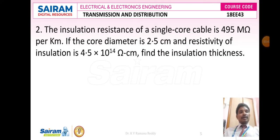Problem number two: the insulation resistance of a single core cable is 495 mega ohms per kilometer. If the core diameter is 2.5 centimeter and resistivity of insulation is 4.5 × 10^14 ohm-centimeter, find the insulation thickness.